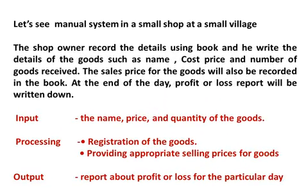Let's consider a manual system in a small shop in a small village. All activities are conducted by human beings, so this system depends on humans. The shop owner records details using a book — name, cost, price, and number of goods received. The sales price is also recorded. At the end of the day, a profit or loss report is written down. Input is the name, price, and quantity of goods. Processing includes registration of goods and providing the appropriate selling price. Output is the report about profit or loss for the day.